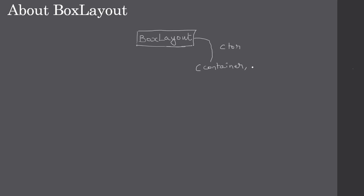Box Layout is from the javax.swing package. One can construct a Box Layout using its constructor, which takes two parameters: the container for which the Box Layout is being applied, and the orientation of the control or component placement — that is, in what order you want to place the components, on the X-axis or on the Y-axis.